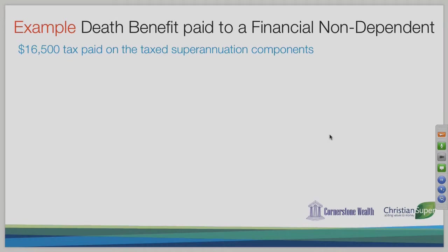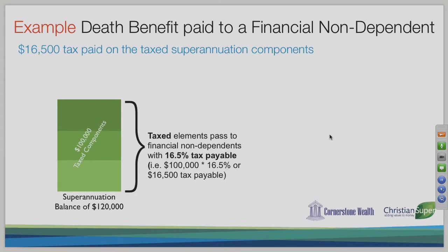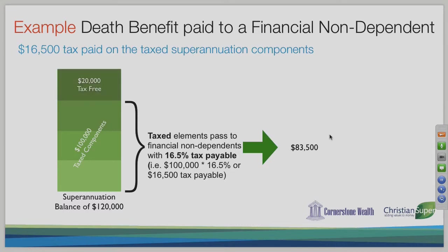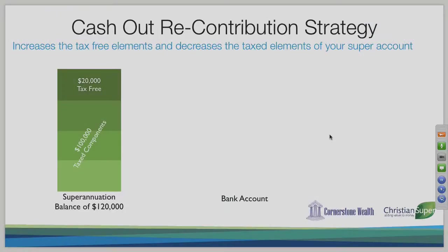A death benefit paid to a financial non-dependent could result in potentially $16,500 in tax. For example, if you have $120,000 in super with $100,000 as taxed components and $20,000 as tax-free, the non-dependent would pay 16.5% on the $100,000 taxed portion — receiving only $83,500 instead of $100,000. The $20,000 tax-free portion passes through tax-free, so the net benefit is $103,500 rather than the full $120,000, meaning your beneficiaries miss out on $16,500.